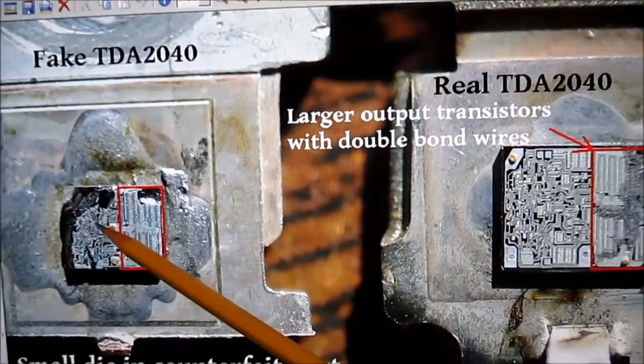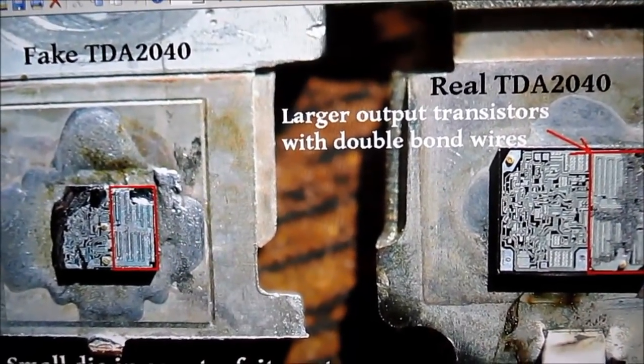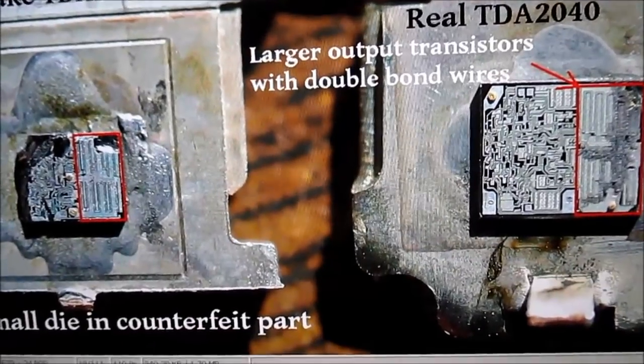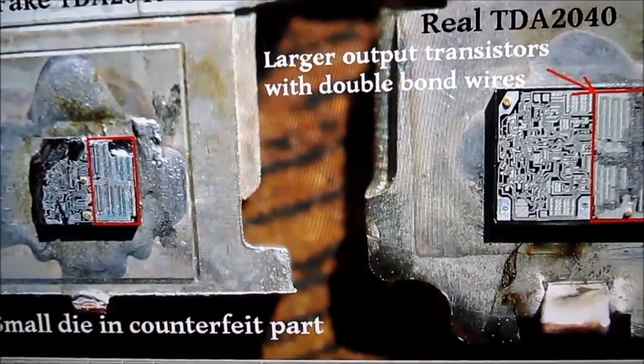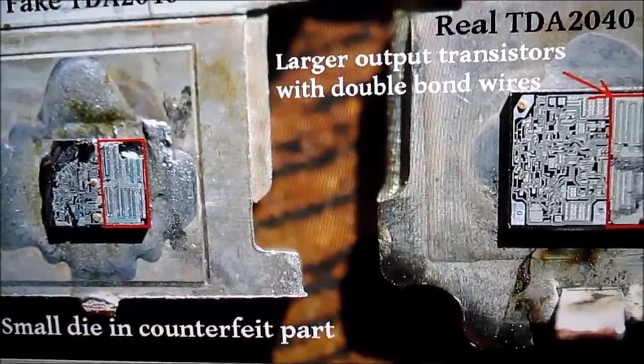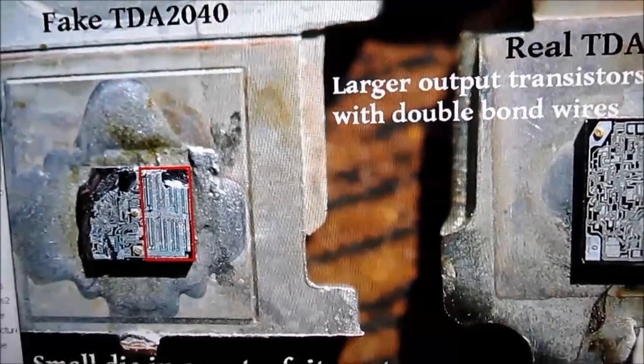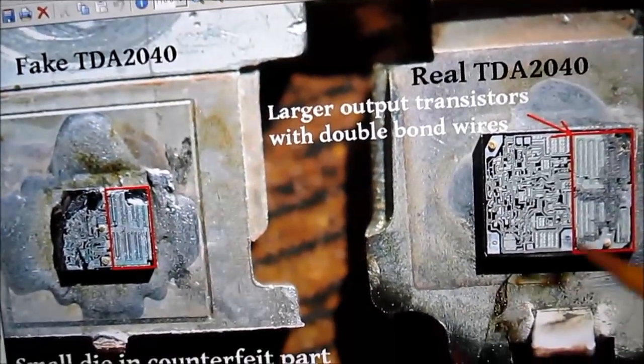I was measuring the area of these die using a micrometer. The authentic TDA 2040 had a die area of 8.3 square millimeters and the fake one had only 3.9 square millimeters. Less than half the area.